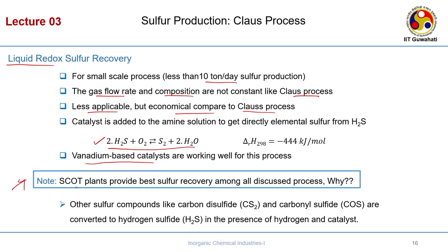An important outcome of this study is that the SCOT plants provide the best sulphur recovery among all discussed processes. The reason is that other sulphur compounds like CS2 and COS are converted to H2S in the presence of hydrogen and catalyst in the SCOT reactor. In the super-Claus process, this is not true — its selective oxidation reactor does not handle these other sulphur compounds. Therefore the SCOT process gives the best conversion and recovery.